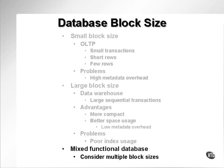There are obvious advantages to having a mixed functional database where you can consider the use of multiple block sizes. In other words, for parts such as static data or OLTP data, you could use smaller block sizes, and for parts of the database used for large transactions such as a data warehouse section, you could use large block sizes. That's the basics of physical I/O distribution.